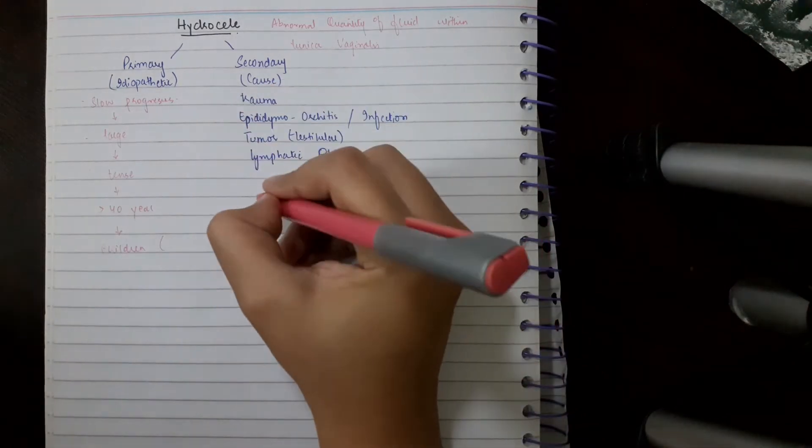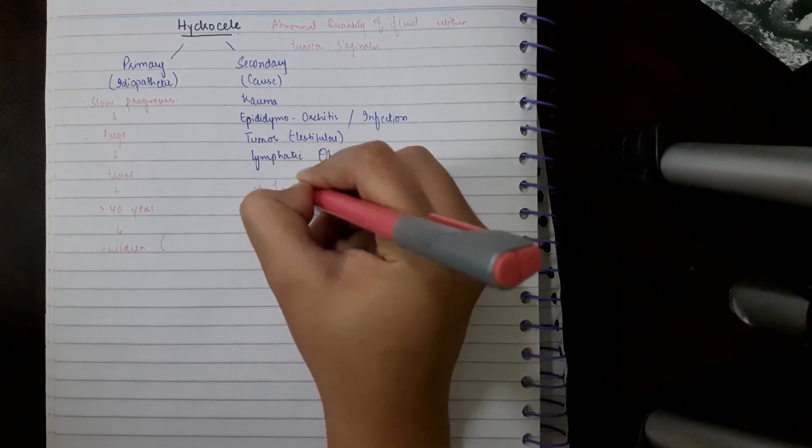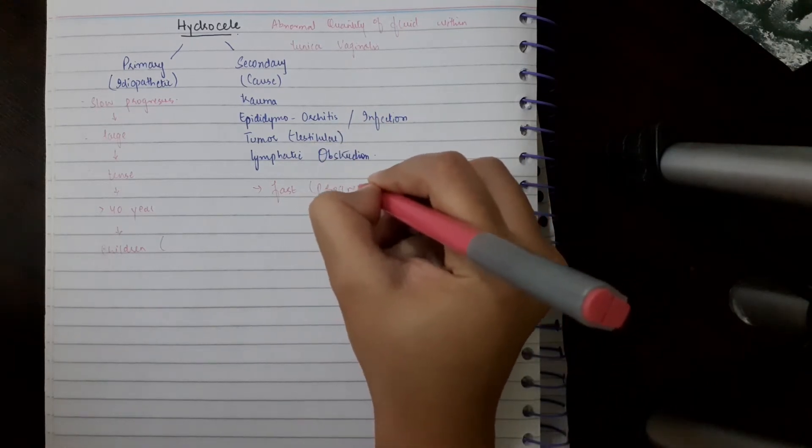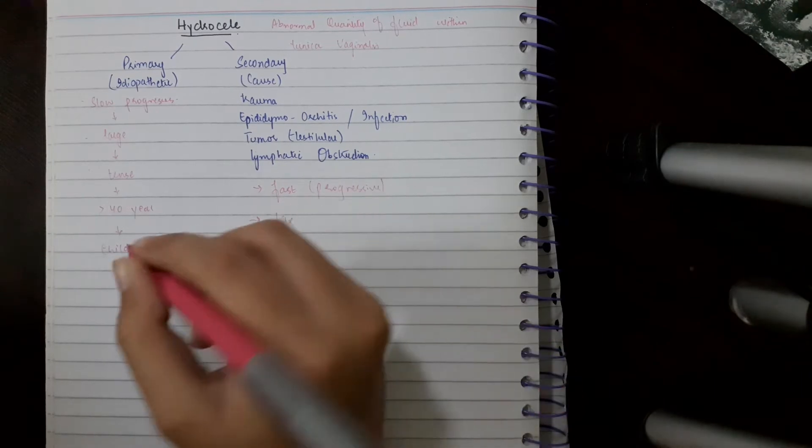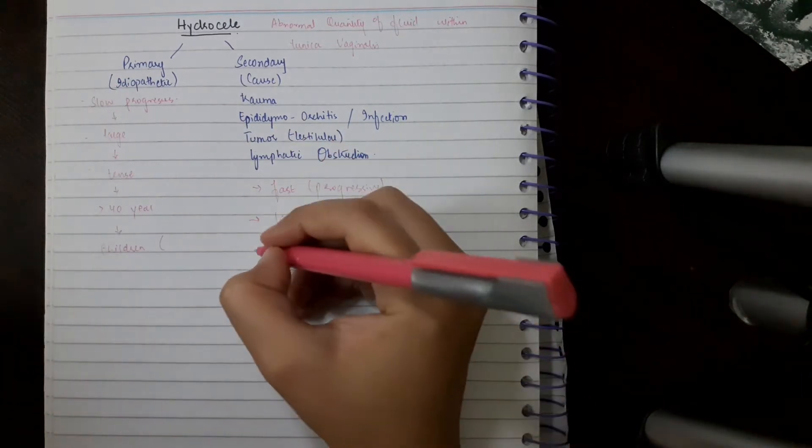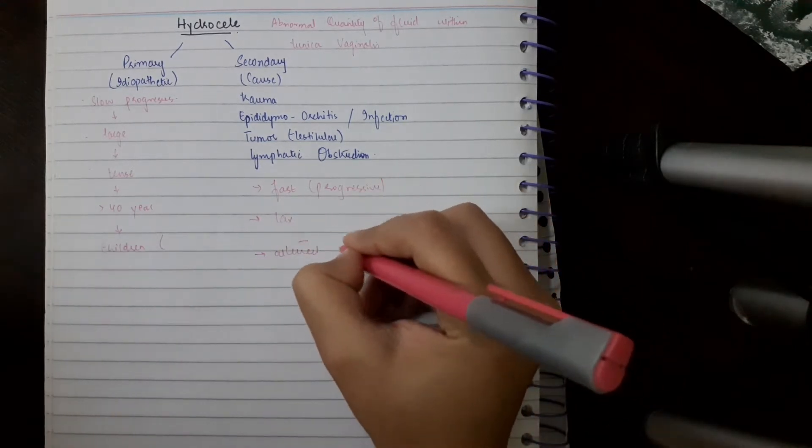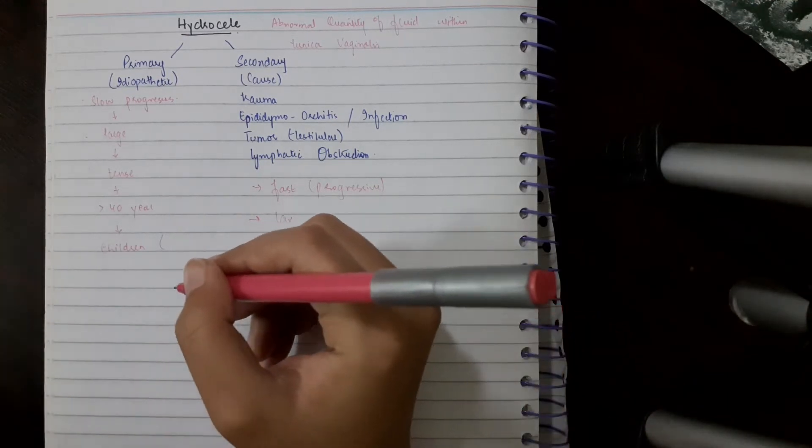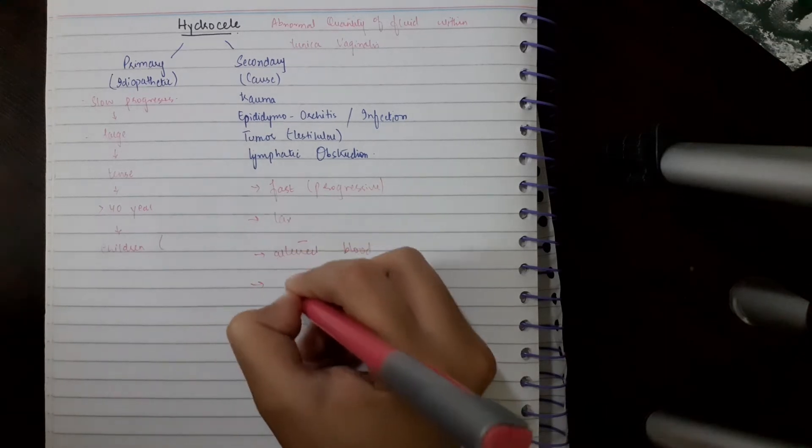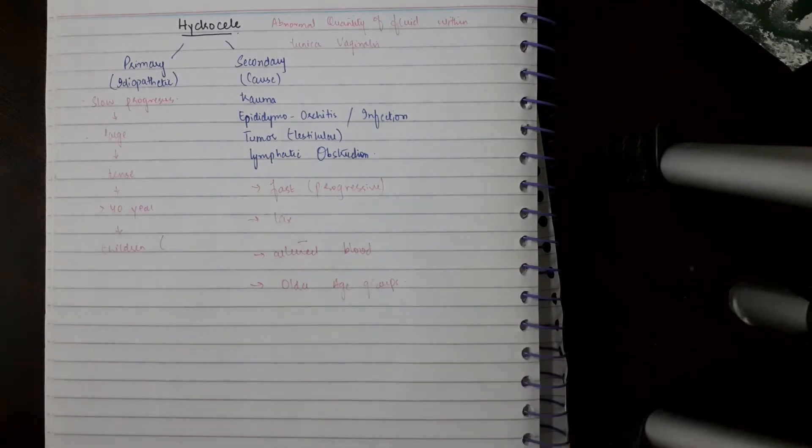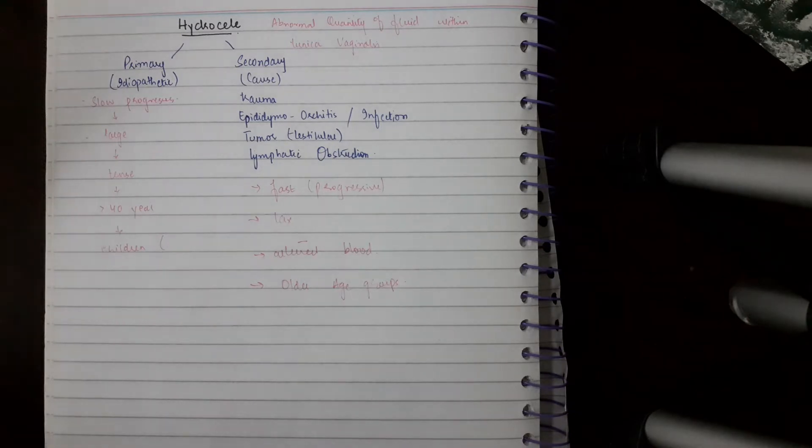Secondary hydrocele progresses very fast. Its progression is rapid, and it is lax, opposite to primary that was tense. There is altered blood present. The age is basically in older age groups, as trauma, infections, tumors, and lymphatic obstructions are common in older age groups. Children are not usually affected by these.